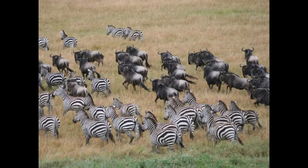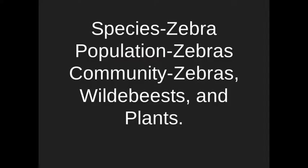Here you can see two different types of species — wildebeest and zebra — running. So here's an example: species is zebra; population is zebras; community is zebras, wildebeest, and plants.